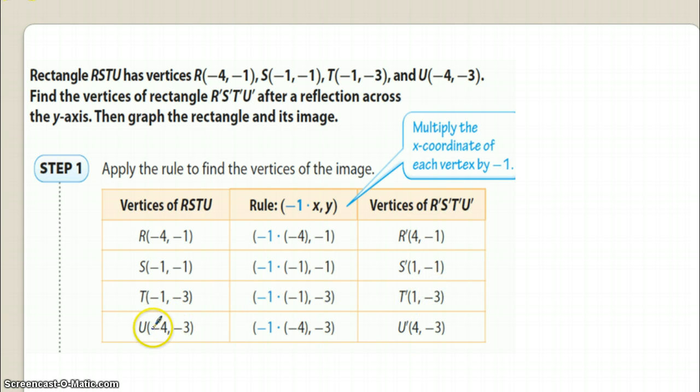And then U, you have (-4, -3). So again, -4 is the x-value or the x-location, so you would multiply -1 times -4, which is 1 times 4 is 4, negative times a negative is a positive. So that will be (4, -3). You do nothing at all to the y-value. You leave it just the way it is.